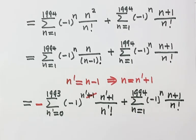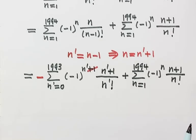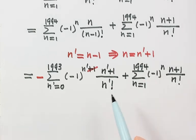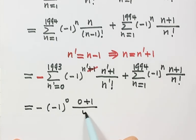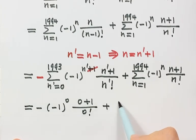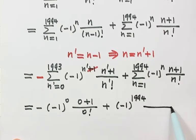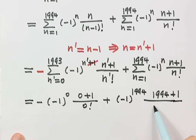When we do the addition, all the terms cancel except the first term of the first sum and the last term of the second sum. The first remaining term has n' equals 0, giving negative 1 to the power 0, times 0 plus 1, over 0 factorial. The last remaining term has n equals 1994, giving negative 1 to the power 1994, times 1994 plus 1, over 1994 factorial.